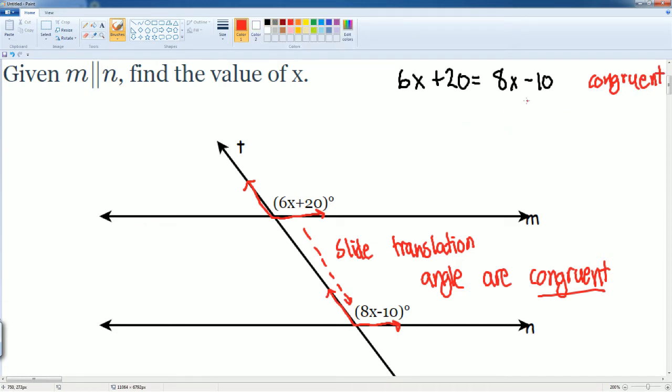I'm gonna add 10 to both sides. I get 6x plus 30 is equal to 8x. Now get x on one side so I subtract 6x to both sides. I get 30 is equal to 2x. Divide by 2. I get x is equal to 15.